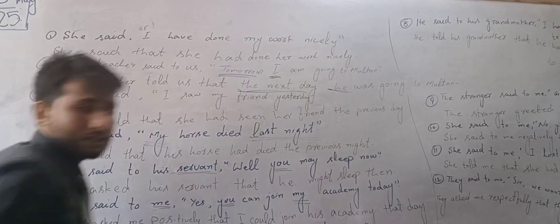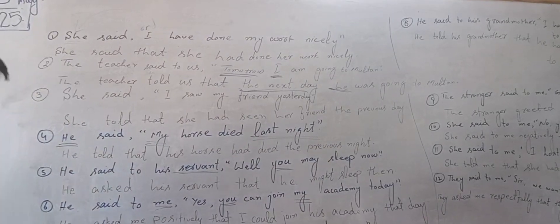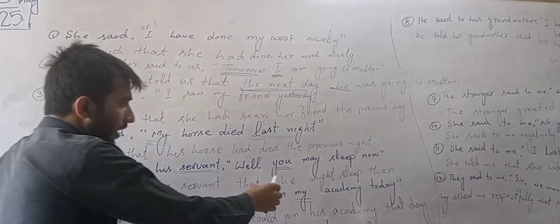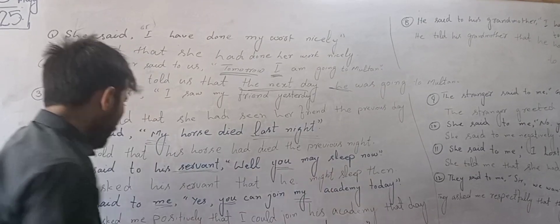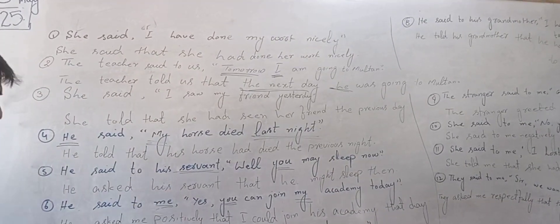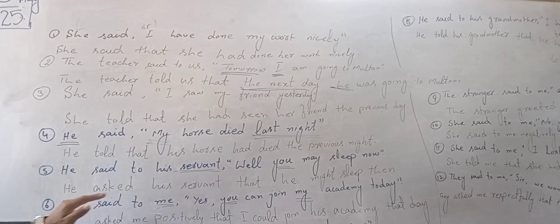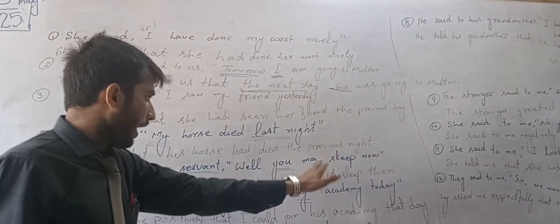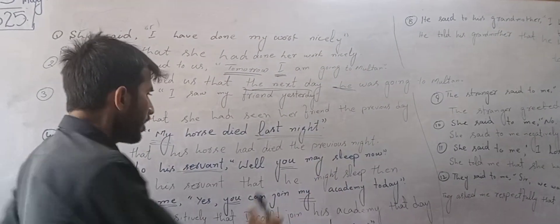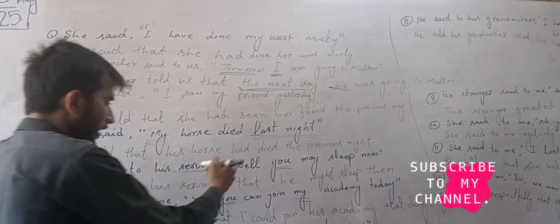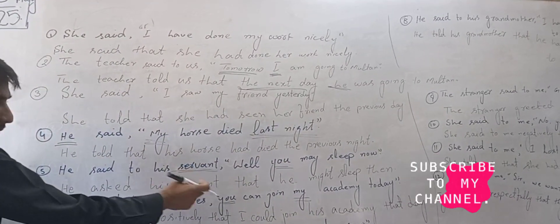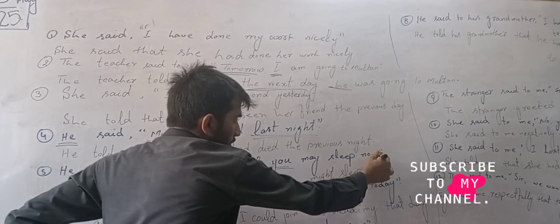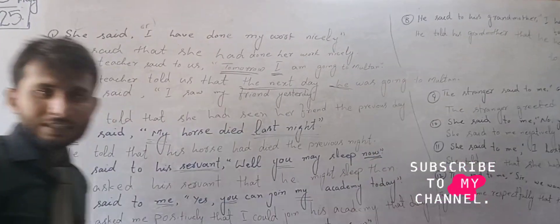He said to his servant: 'You may sleep now.' He ordered his servant, so he asked his servant that he might sleep. Notice the second person subject changes to third person, and 'now' is updated accordingly.